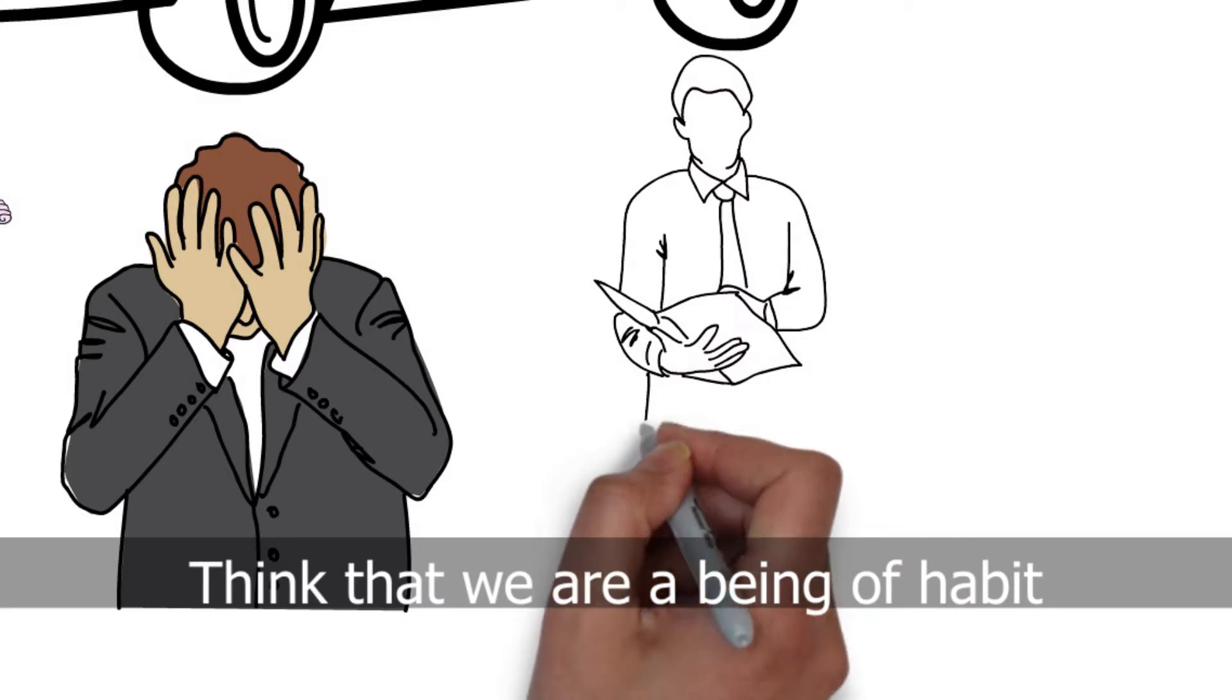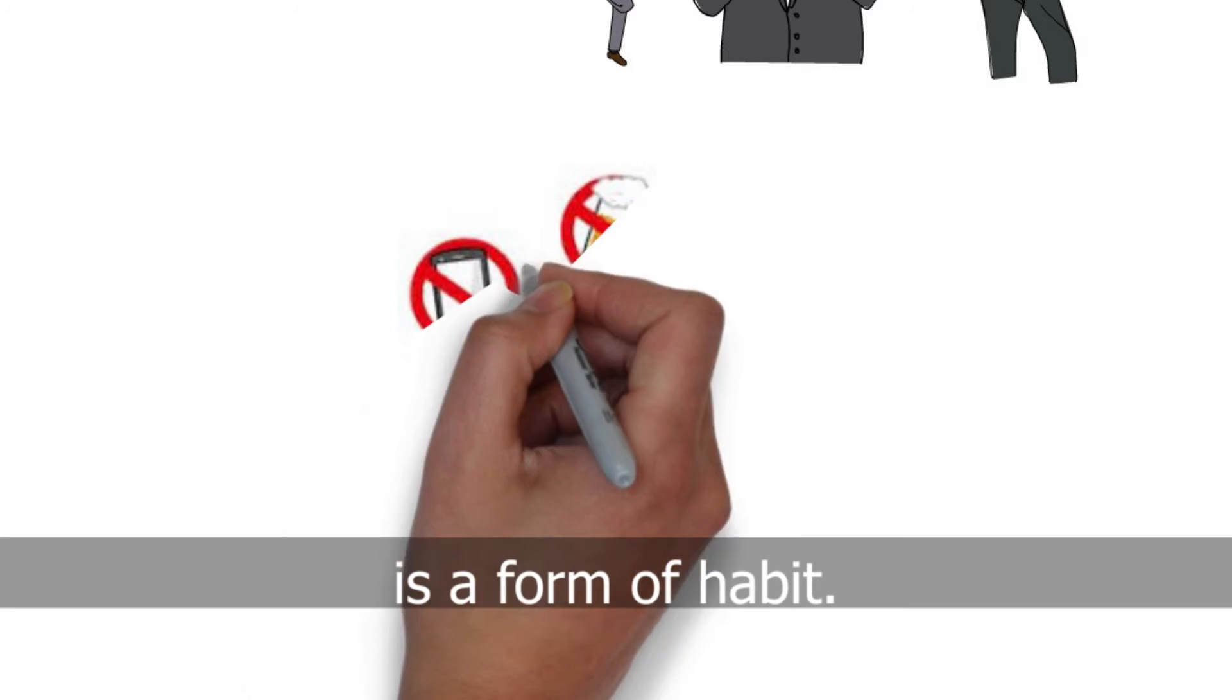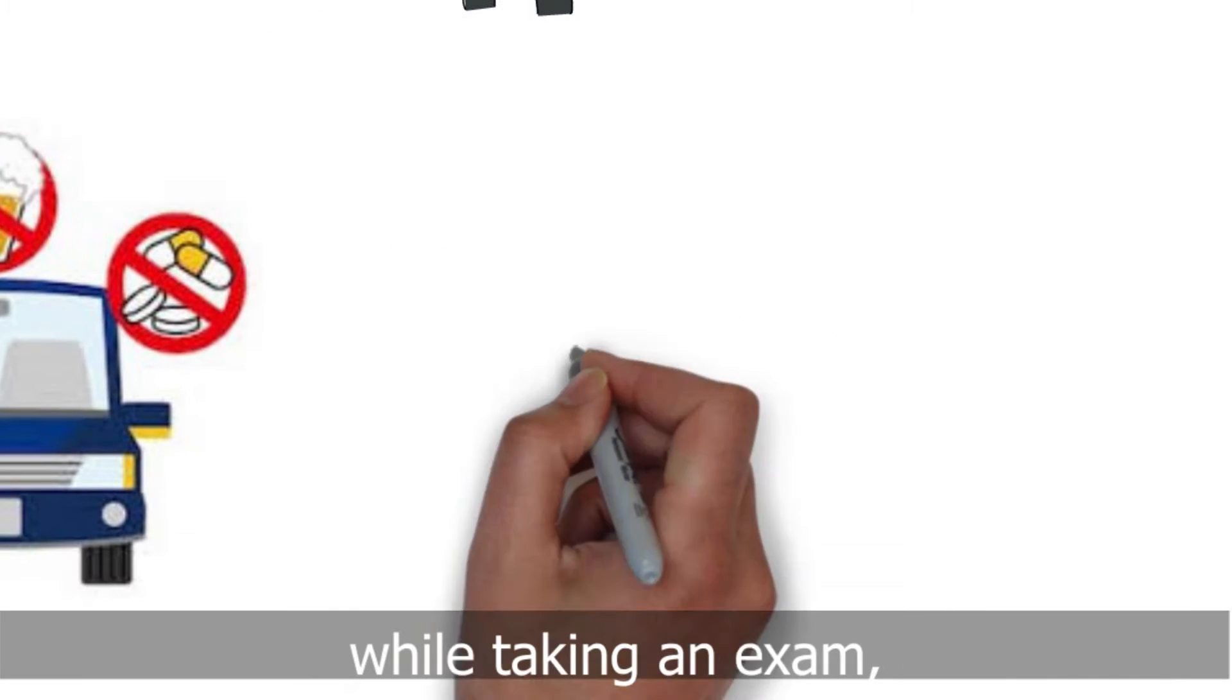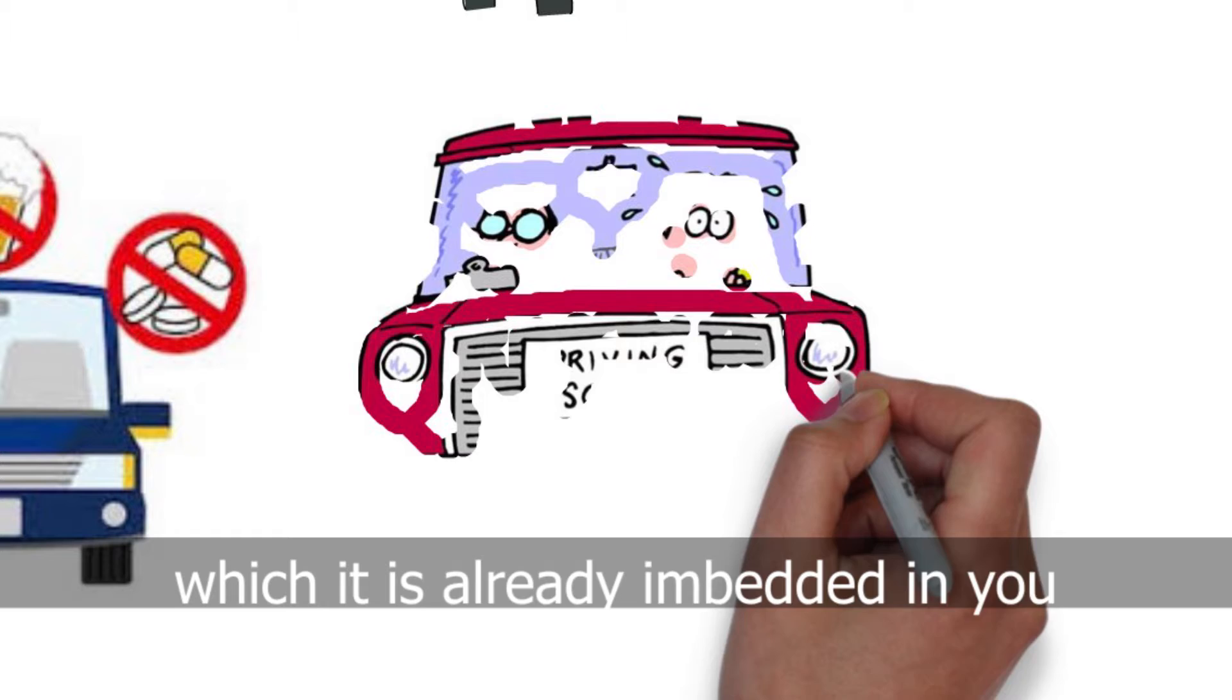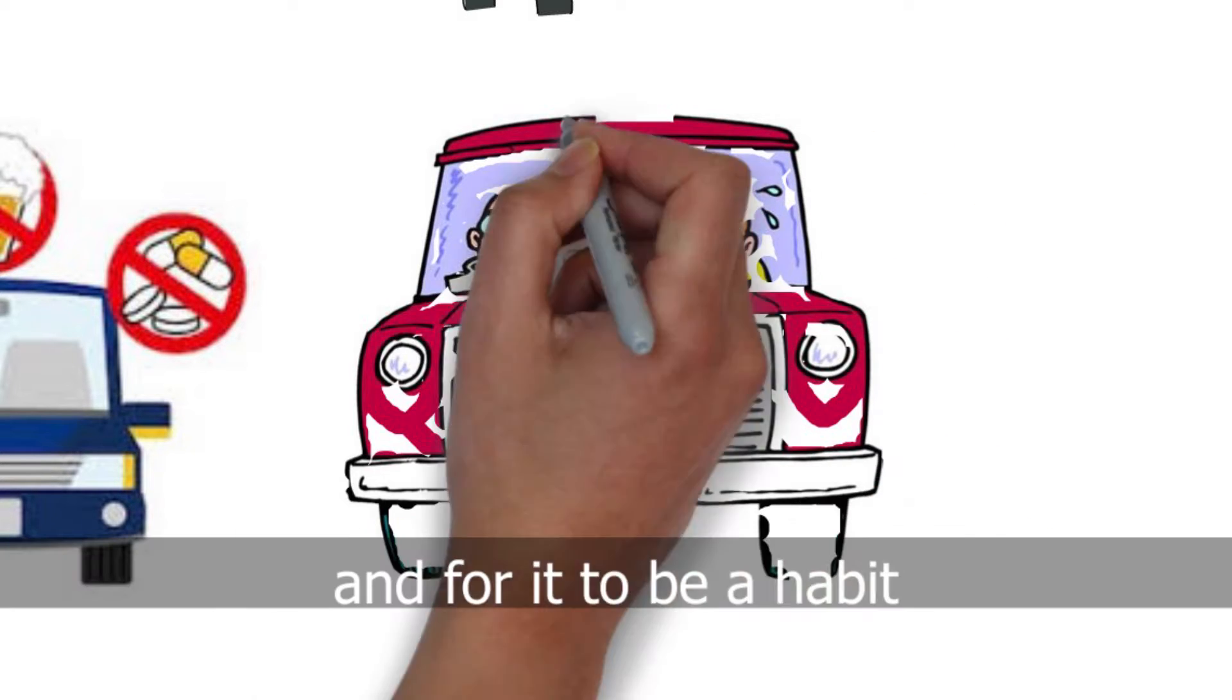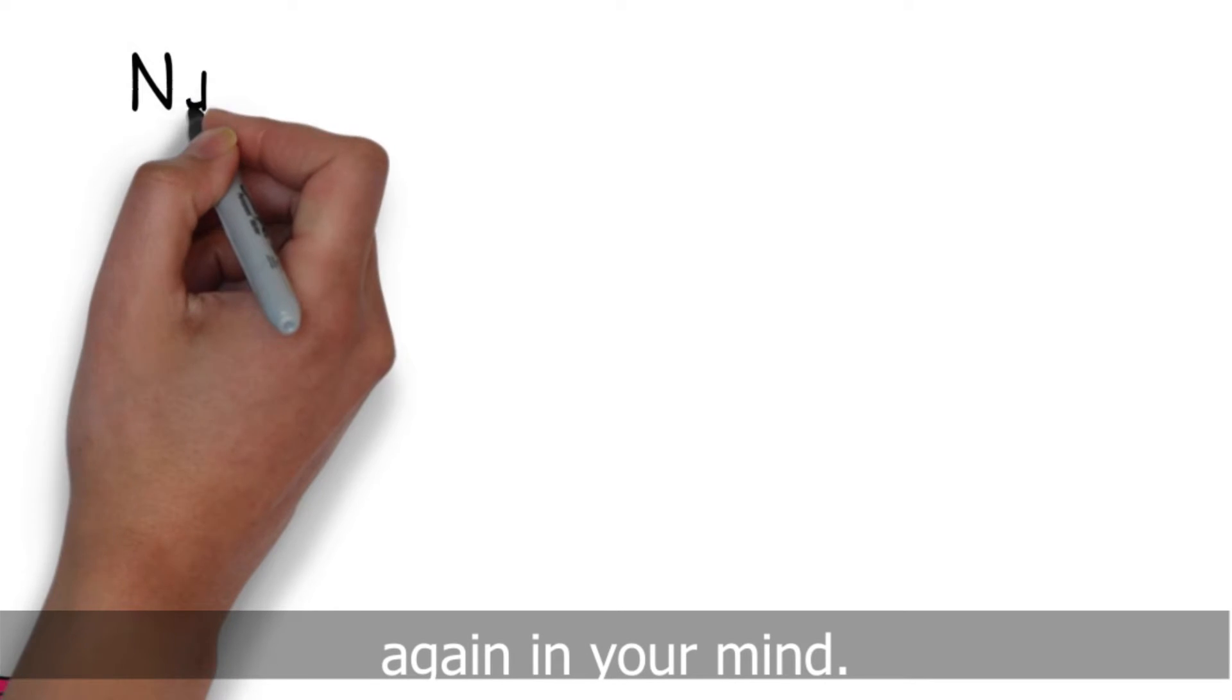Think that we are a being of habit and anything you do without thinking about it is a form of habit. That's what the examiner wants to see on us while taking an exam, which is already embedded in you, the habit of a good and safe driver. And for it to be a habit, you have to redo it over and over again in your mind.